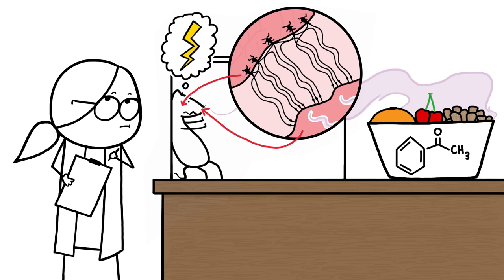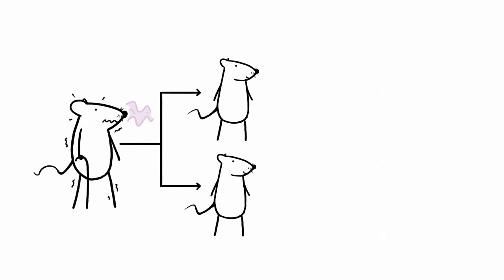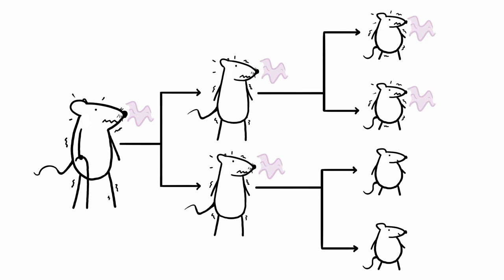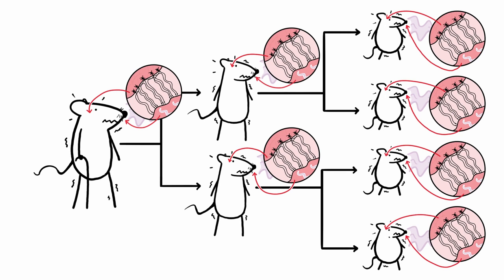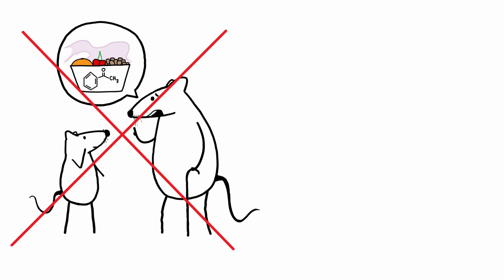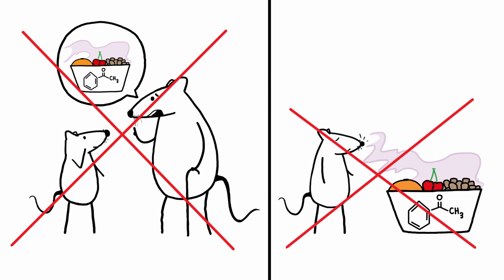This result isn't shocking. What is surprising is that the rats' pups and their pups' pups were also startled by the smell of acetophenone and had the same extra neurons as their fathers, despite never having been introduced to either their dads or the fruity scent before.